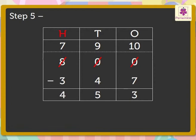So we got the answer as 453. 800 minus 347 is equal to 453.